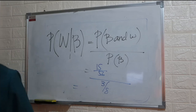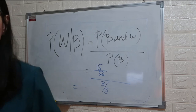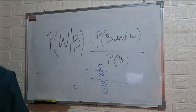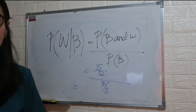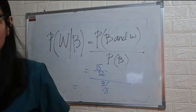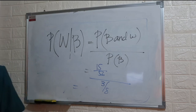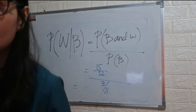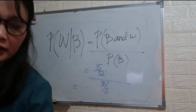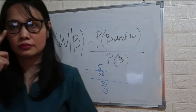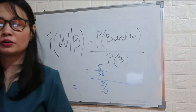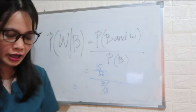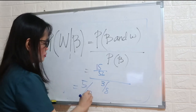After simplifying — your answer must be simplified — the answer is 5 over 7.